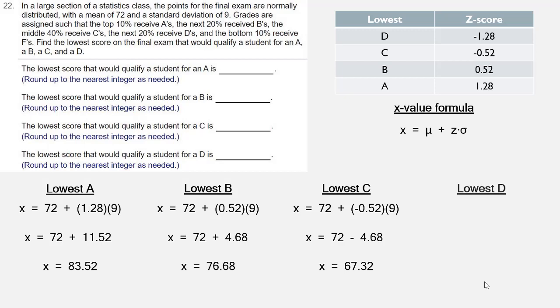And then for the lowest D, we insert the Z-score of negative 1.28. We multiply and add, and we get 60.48.